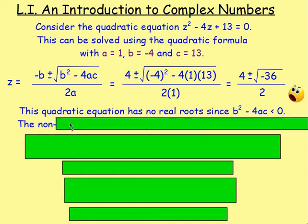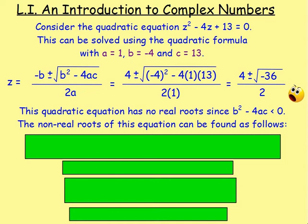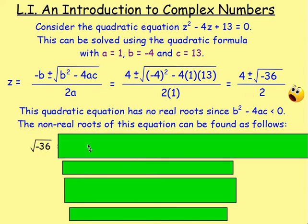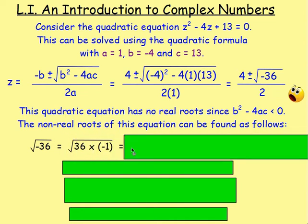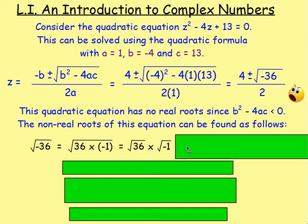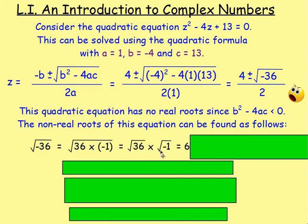But what we could do is work out the non-real roots. The bit stopping us is this √(−36). Let's find another way of writing it: negative 36 is the same as 36 × (−1). Because we have √(something × something), we can split it up: √36 × √(−1). The square root of 36 we know is 6.